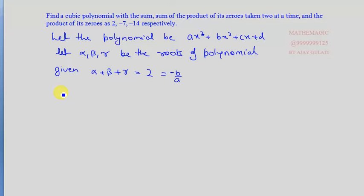αβ + βγ + γα, this is -7, which equals c/a.